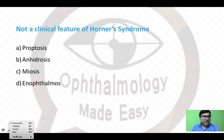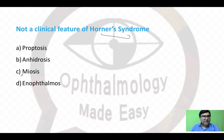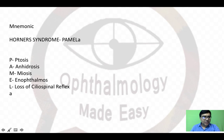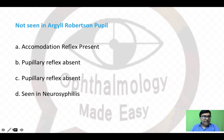The next question: what is not a clinical feature of Horner's syndrome — proptosis, anhydrosis, miosis, or enophthalmos? The answer is proptosis — you get ptosis, not proptosis, in Horner's syndrome. The mnemonic is PAMELA: P — ptosis, A — anhydrosis, M — miosis, E — enophthalmos, L — loss of ciliospinal reflex.